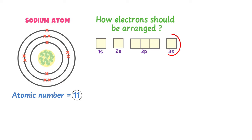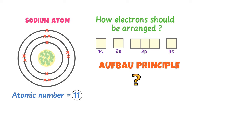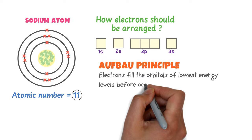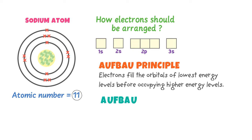Should I place electrons in 3s first, or 1s, or 2s? Well, to solve this problem, we use the Aufbau principle. Now, what is the Aufbau principle? Aufbau principle states that electrons fill orbitals of the lowest energy levels before occupying higher energy levels. Remember that Aufbau is not the name of any scientist — it is a German word which means 'to build'.